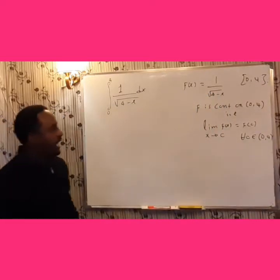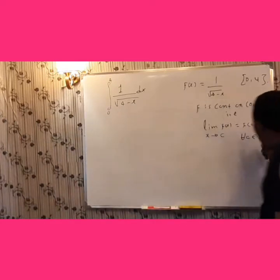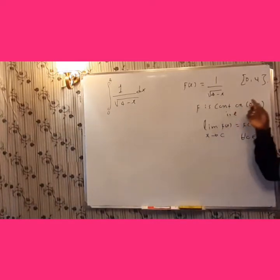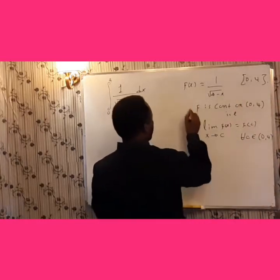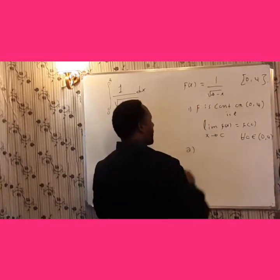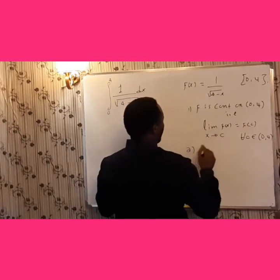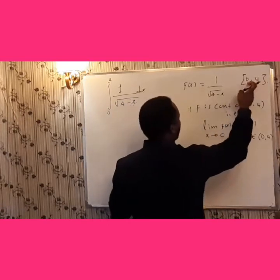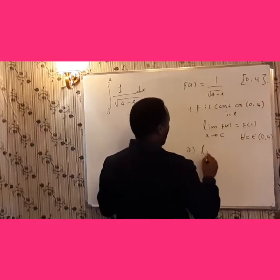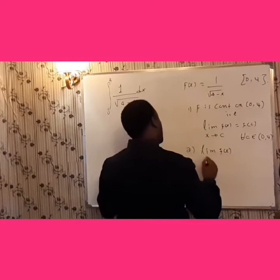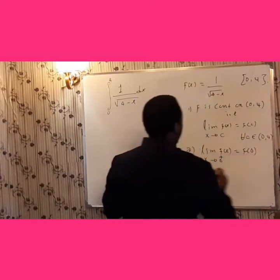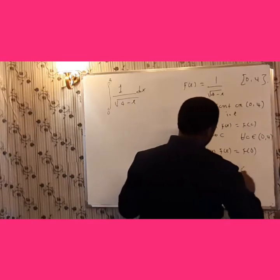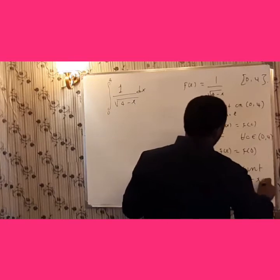That means if you take any arbitrary point in the interior of this interval, that is always defined. So it is continuous — no problem. The second point: we need to show that f is continuous or not at 0 and 4. The limit of f(x) as x approaches 0 from the right is f(0), and this implies that f is continuous at x equals 0.